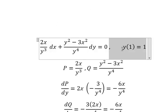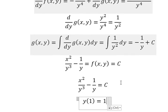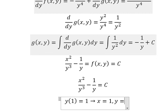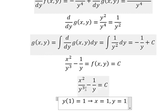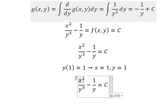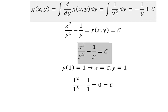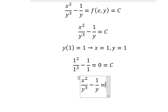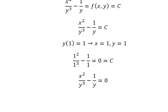Next we apply the initial conditions. When x equals 1 and y equals 1, we substitute both into the equation to find the value of C. This gives us zero, so we substitute C equals 0 back in. This is the final answer — thank you for watching, see you.